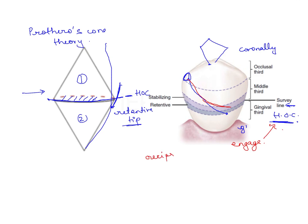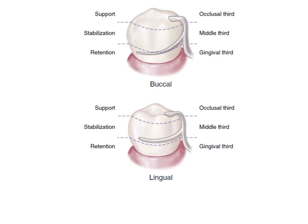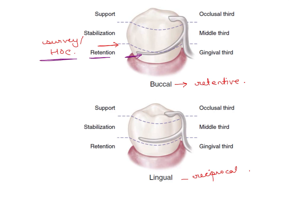A reciprocal arm is only for stabilization, so it has to lie just on the survey line. Buccally is the retentive arm, lingually is the reciprocal arm. This line is the survey line or height of contour. The retentive arm tip must cross this survey line to get retention, whereas the reciprocal tip should stay at the junction of the gingival and middle third. If this was a gingival approaching clasp system, the I-bar should cross the height of contour to provide retention — that would be the RPI system. The retentive tip must cross the height of contour.